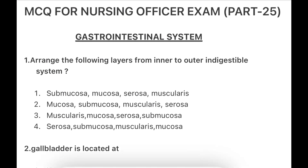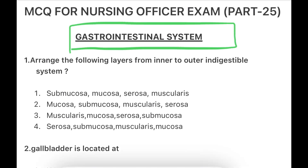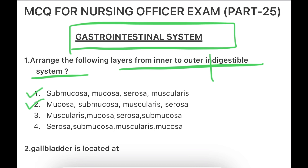So first, this is the gastrointestinal system. Our first question: arrange the following layers from inner to outer in the digestive system. The options are: Submucosa, Mucosa, Serosa, Muscularis; Submucosa, Muscularis, Serosa; Muscularis, Mucosa, Serosa; or Muscularis, Mucosa.